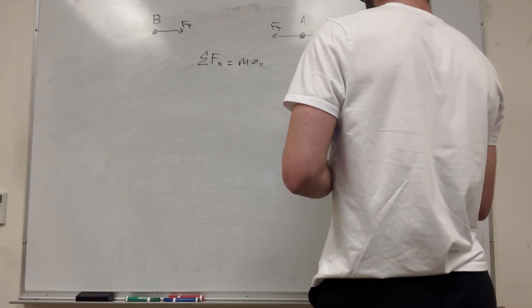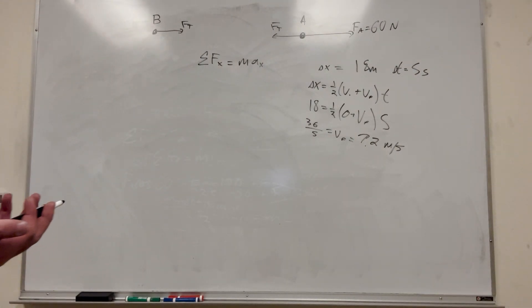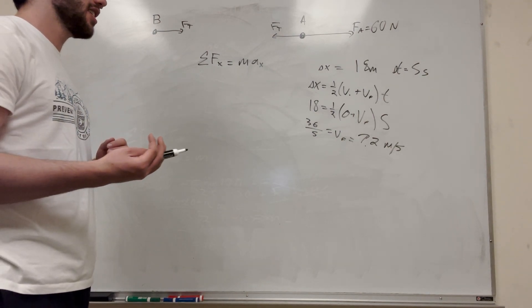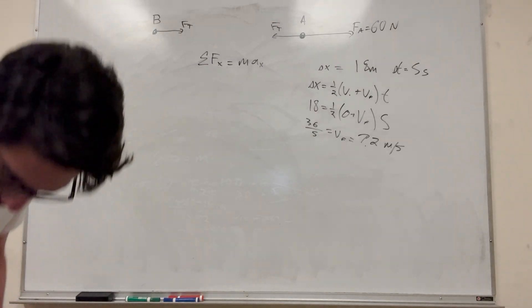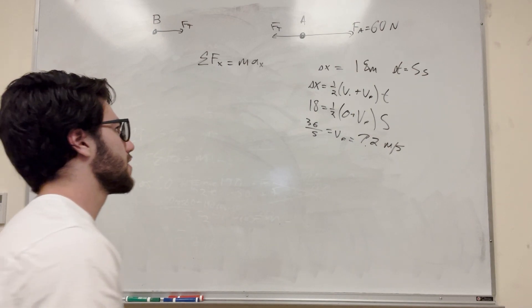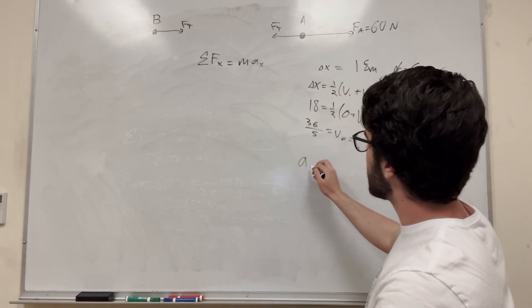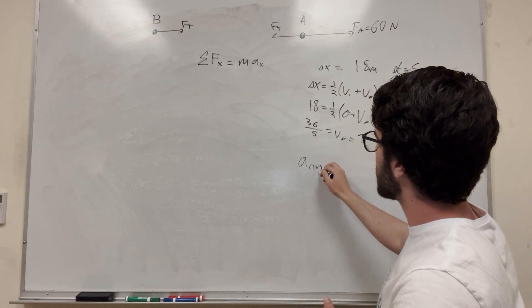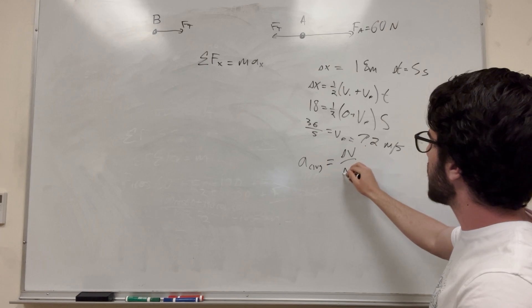So we have velocity, but we don't have acceleration. So we know that our velocity increases linearly, which means that our average acceleration is going to just be equal to our actual acceleration. It's not accelerating at a different rate over time, it's accelerating at a constant rate. So we know that average acceleration is change in velocity over change in time.